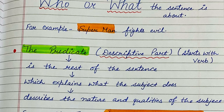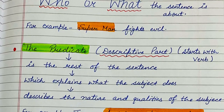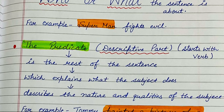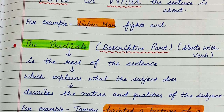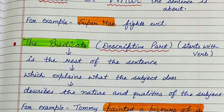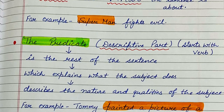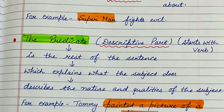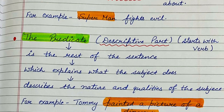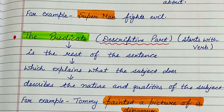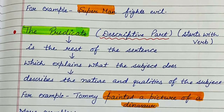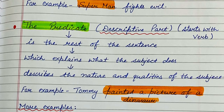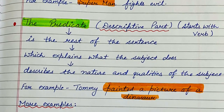Now I will read the rest of the points about the predicate. First, predicate is a descriptive part — it will describe about the subject. Second, once you find out the subject, the rest of the sentence is predicate. For example, 'Superman fights evil' — Superman is the subject, so 'fights evil' is the predicate. Predicate explains what the subject does; here we come to know what Superman does — he fights evil. It also describes the nature and the qualities of the subject.